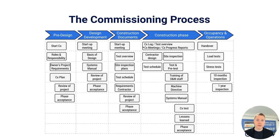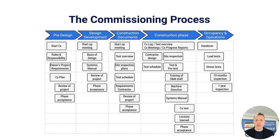Then we come to the construction phase. There's a long gray box at the top of the construction phase — that's the commissioning log, the test overview, commissioning meetings, and progress reports — activities happening continuously during the construction phase. Please note that at the end we have our commissioning test, the final test of the project, followed by lessons learned, phase acceptance, and then we move into the occupancy and operations phase. This is a slim view of the activities attached to the individual phases — some activities will expand across different phases, shorter or longer, depending on your specific project.